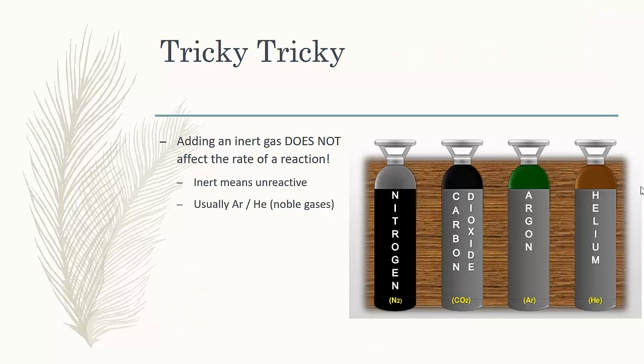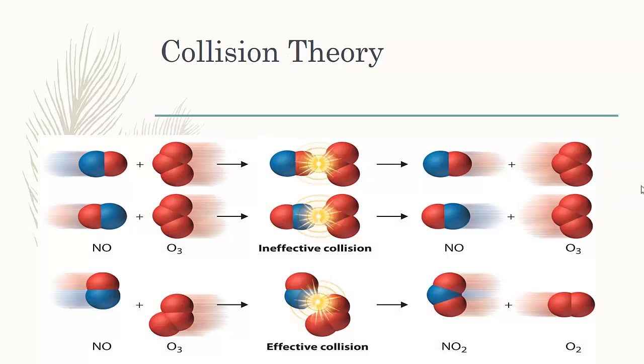The AP exam will try to trick you into thinking other things can speed up or slow down a reaction. So here are things to look out for that do not affect the rate of a reaction. If I'm working with a gas system and I insert more gas, you might be tempted to think that gas is going to affect the concentration in some way. But keep in mind, gases are mostly empty spaces. So if it says, what happens if we pump in extra argon or an inert reactant? Inert means unreactive and therefore it's going to have no effect.